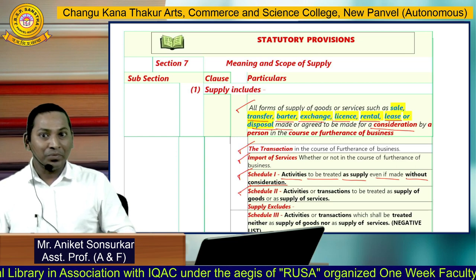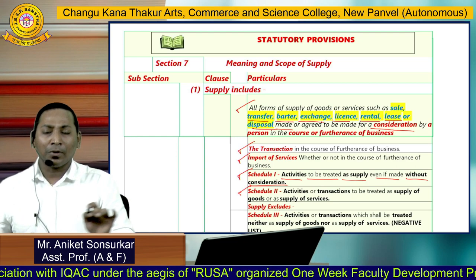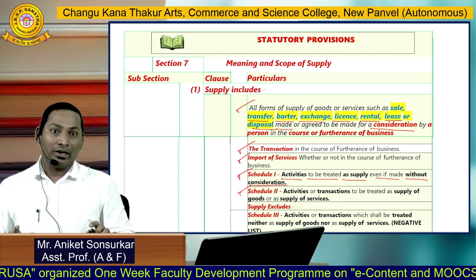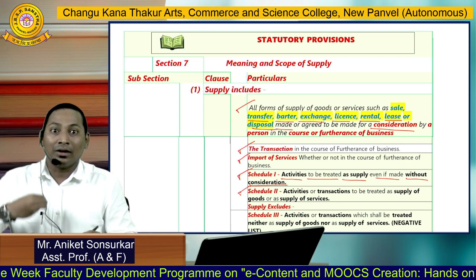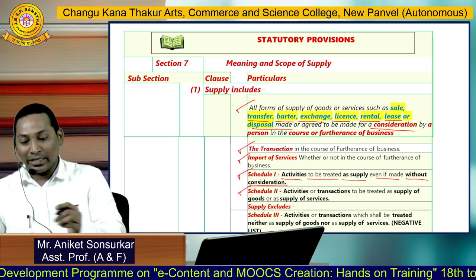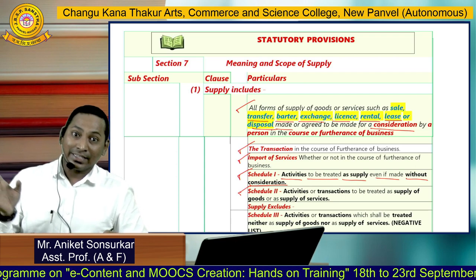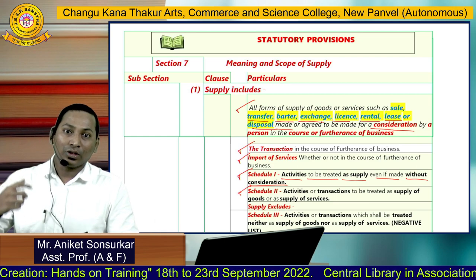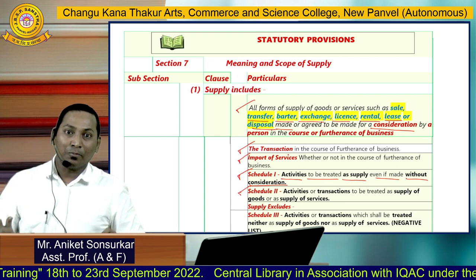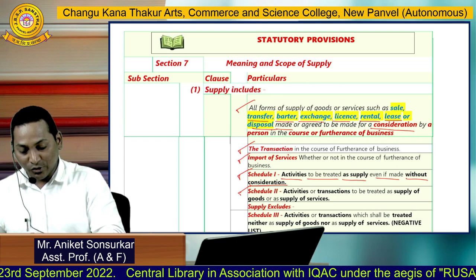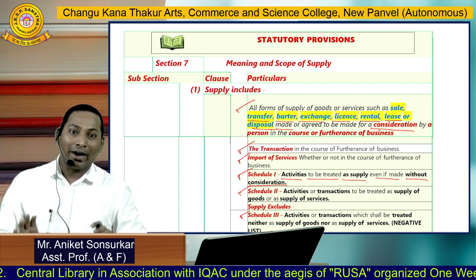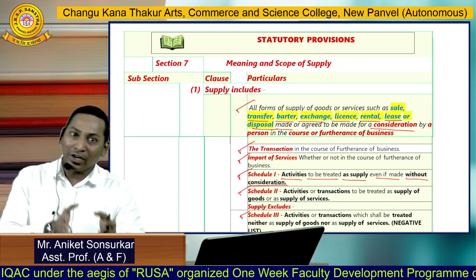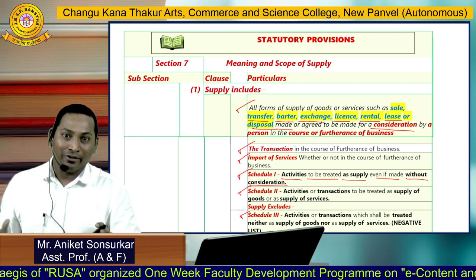To revise these five points briefly: first, all forms of supply of goods or services made with consideration; second, transactions in the course of furtherance of business; third, Schedule 1 activities; fourth, Schedule 2 activities; and fifth, import of services. The most important point is Schedule 3, which is never part of supply — there are some transactions that will never be called supply of goods or supply of services, and therefore Schedule 3 is excluded from the definition of supply.